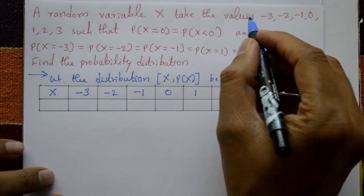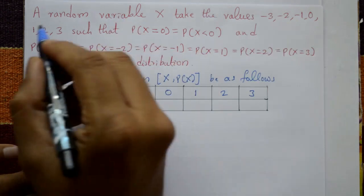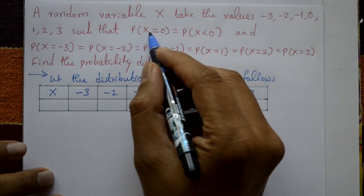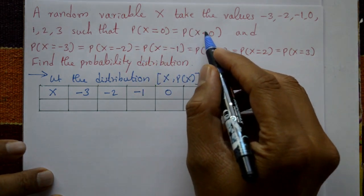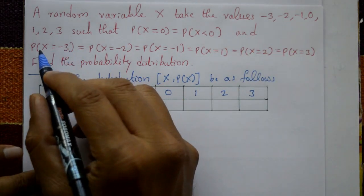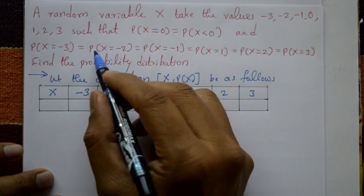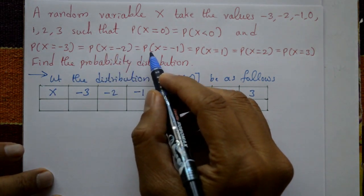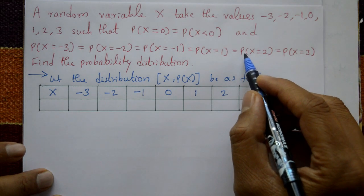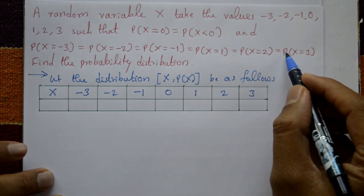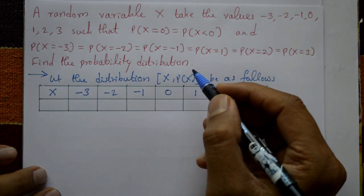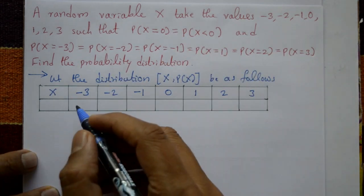A random variable X takes the values minus 3, minus 2, minus 1, 0, 1, 2, 3 such that probability of X equal to 0 is equal to probability of X less than 0, and the probability that X is greater than minus 3 is equal to probability X equals minus 2, equals probability X equals minus 1, equals probability X equals 1, equals probability X equals 2, equals probability X equals 3. Find the probability distribution.